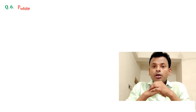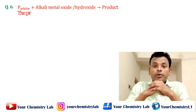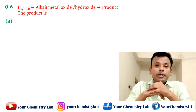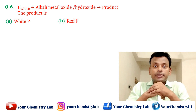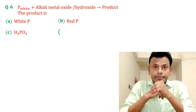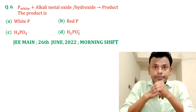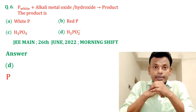Question number six: white phosphorus plus alkali metal oxide or hydroxide gives a product. Options A, B, C, and D are given. Answer: option D is the correct answer.